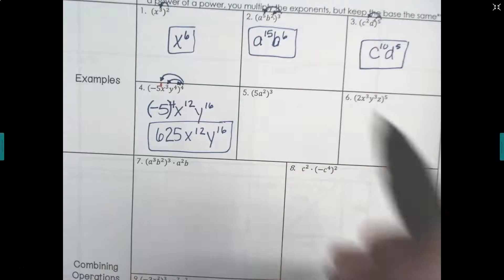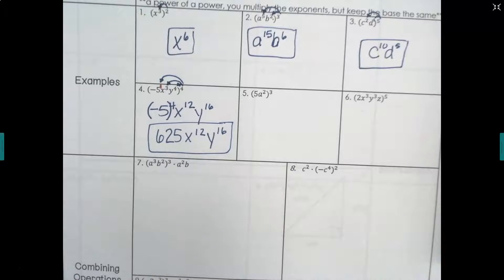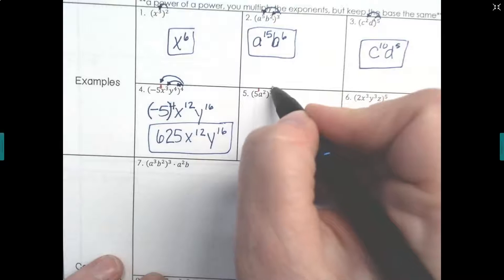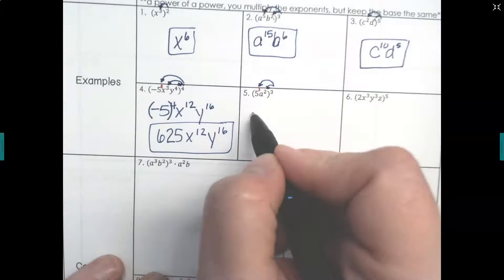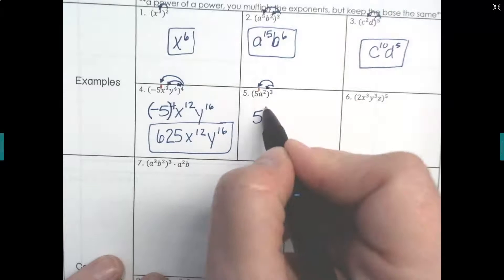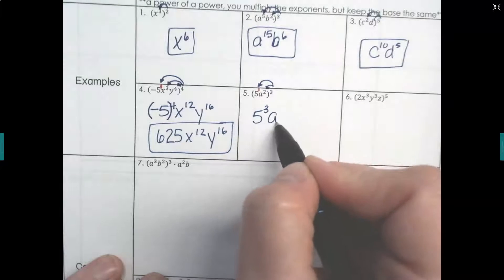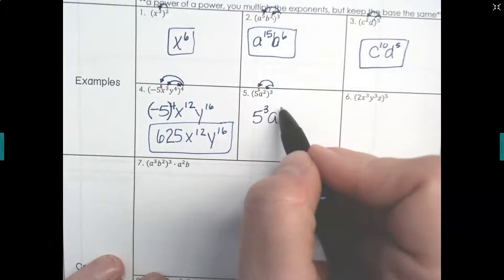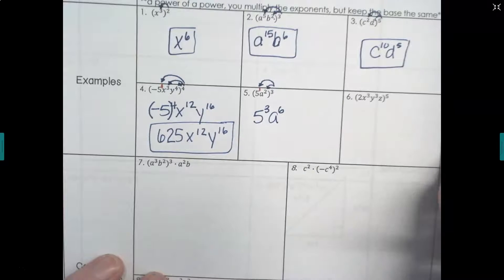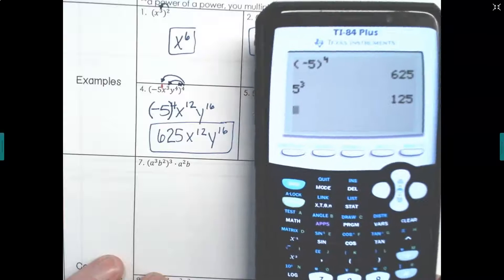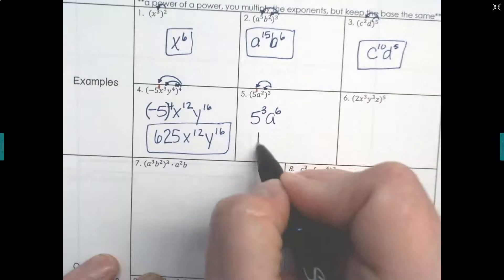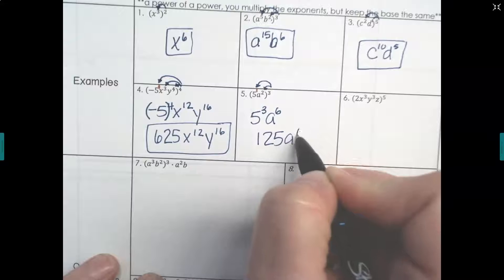Let's try that again. Remember the five has an exponent of one on it here, and this outer exponent gets distributed to every single exponent inside. So five: one times three gives five cubed. Then a is being squared: two times three is six. Five raised to the third equals 125, and then a to the sixth.